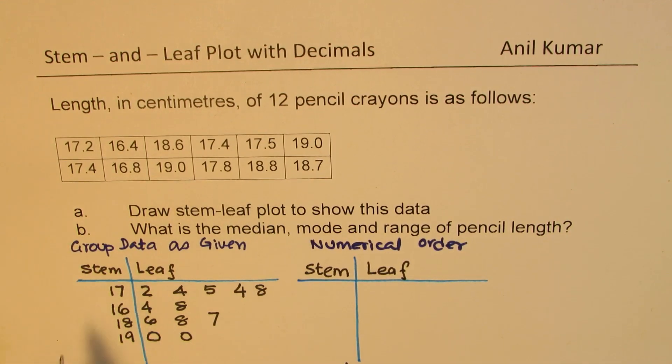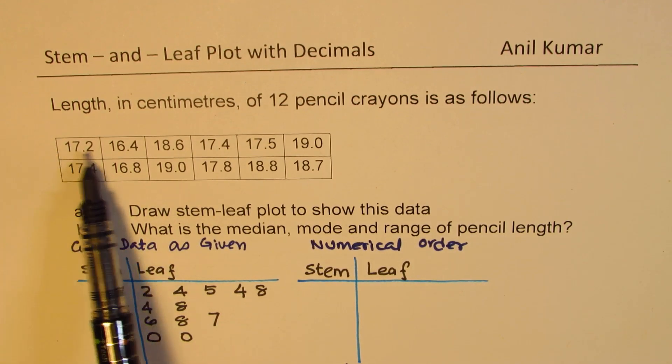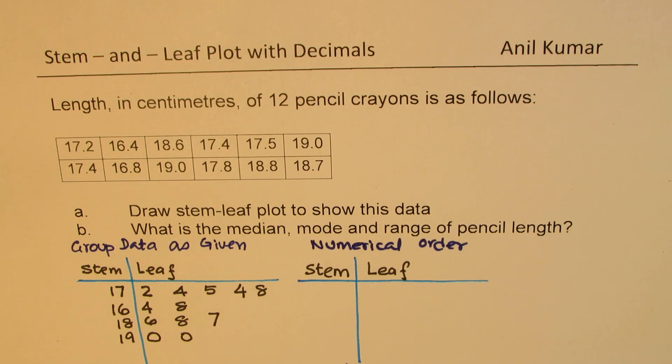Finally we get our stem and leaf plot. Now some of you while placing this you could have written 16 first and 17 later. When I say arrange them as given in the group, we try to go as per each data element. Now we see that the numerical order, 16 comes before, so we'll take up this group with 16.